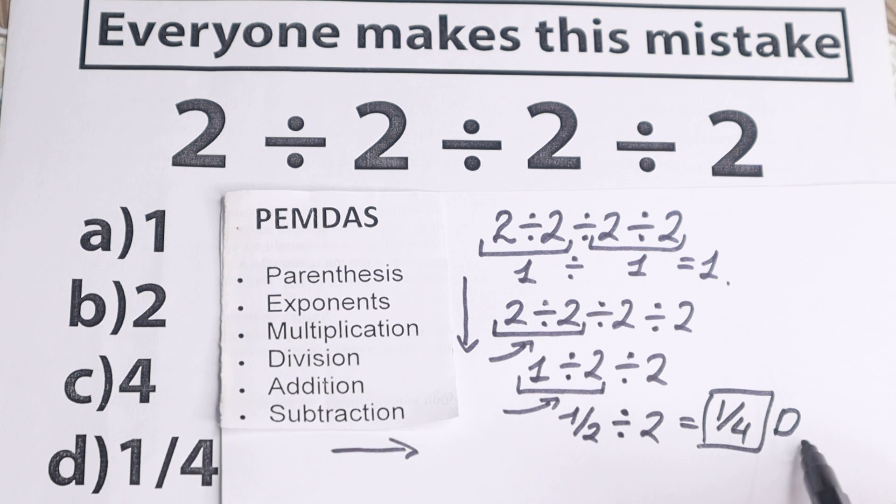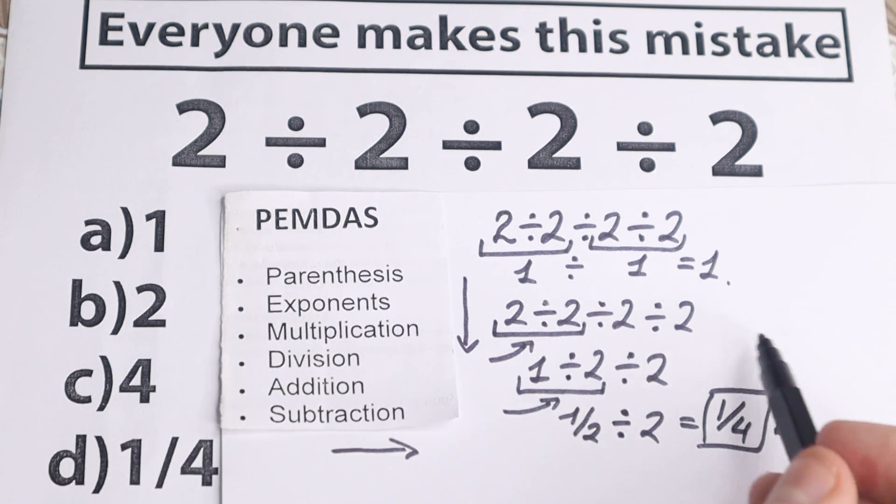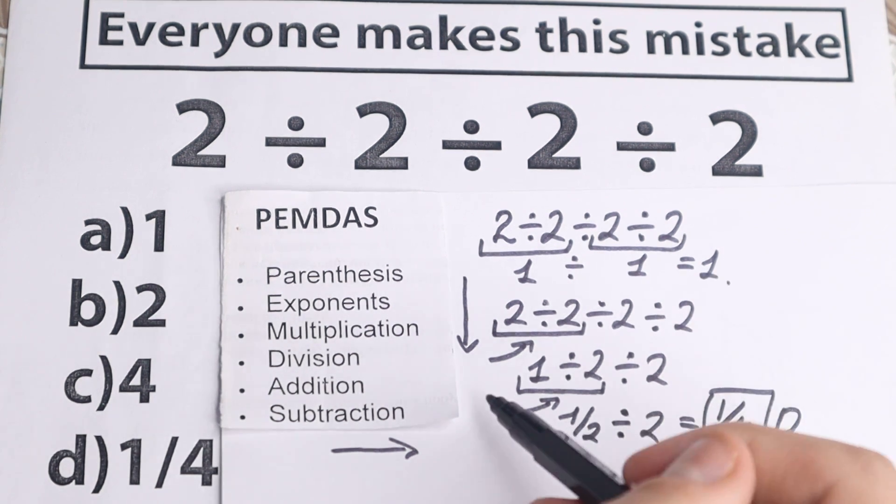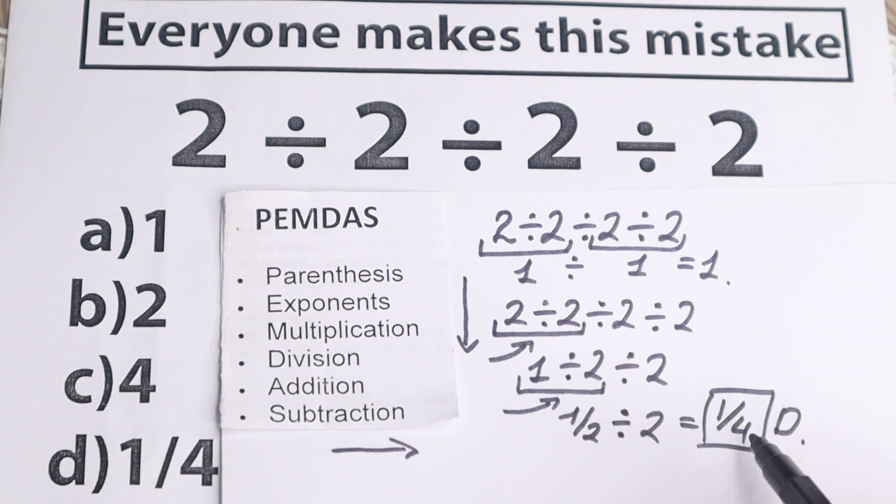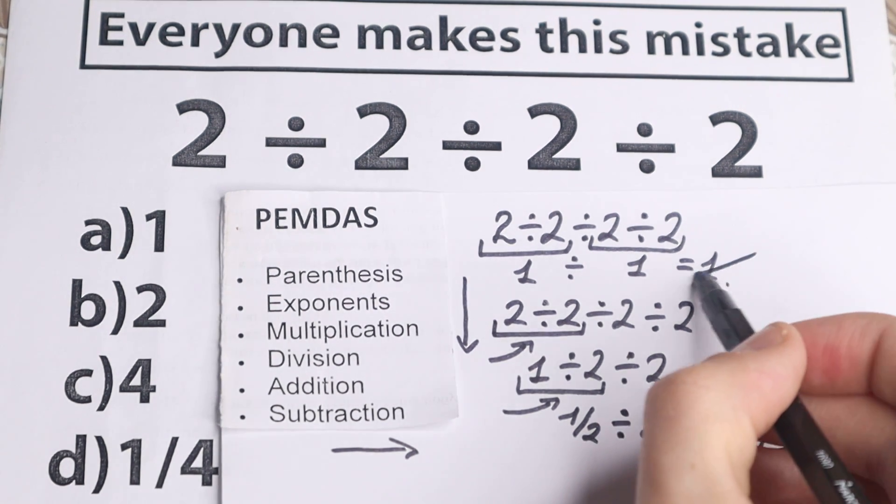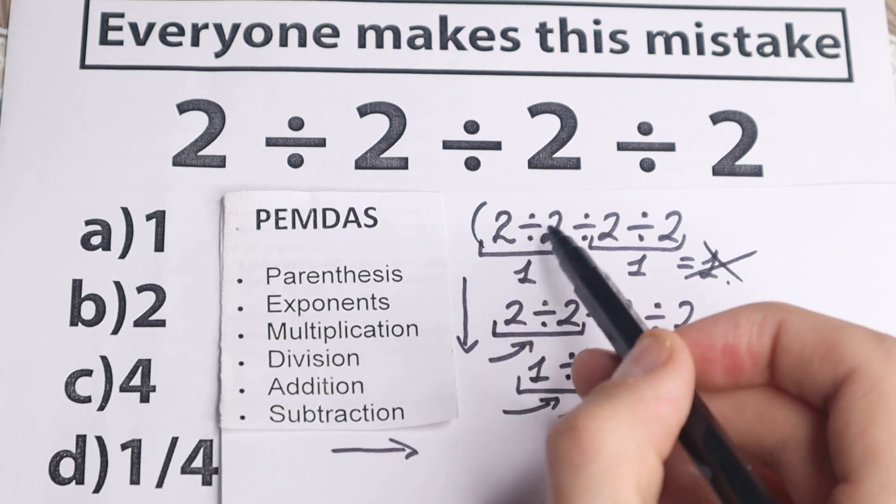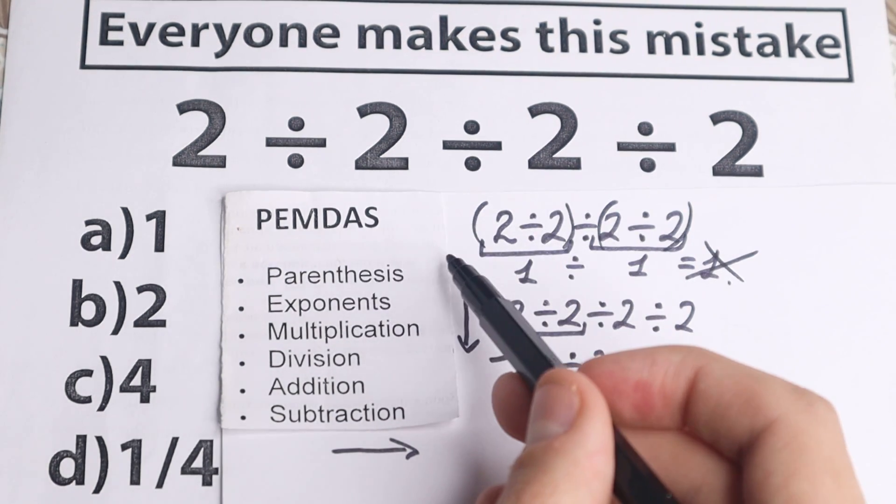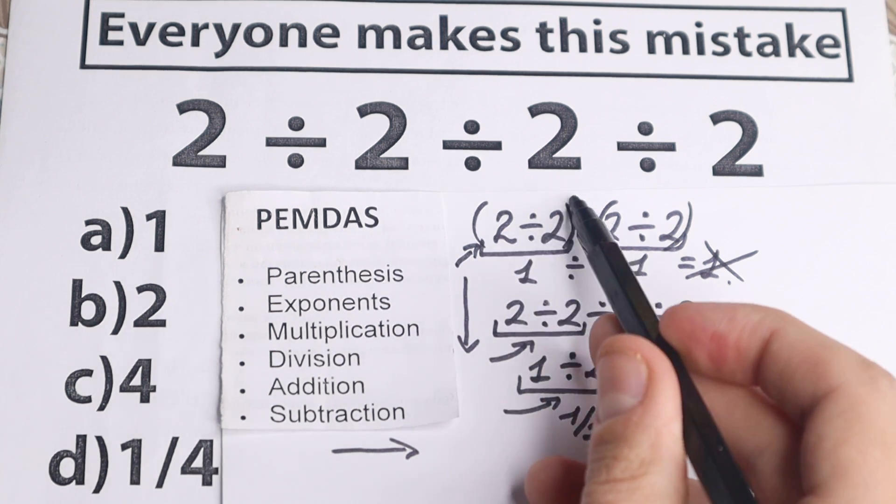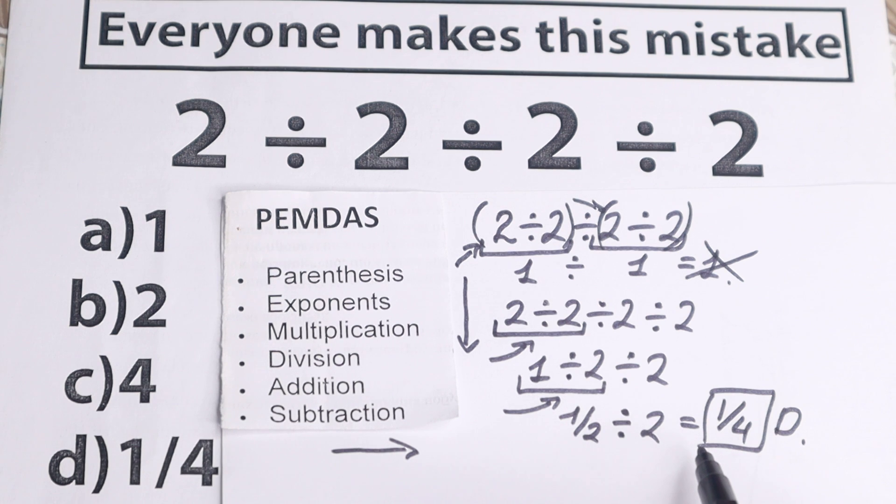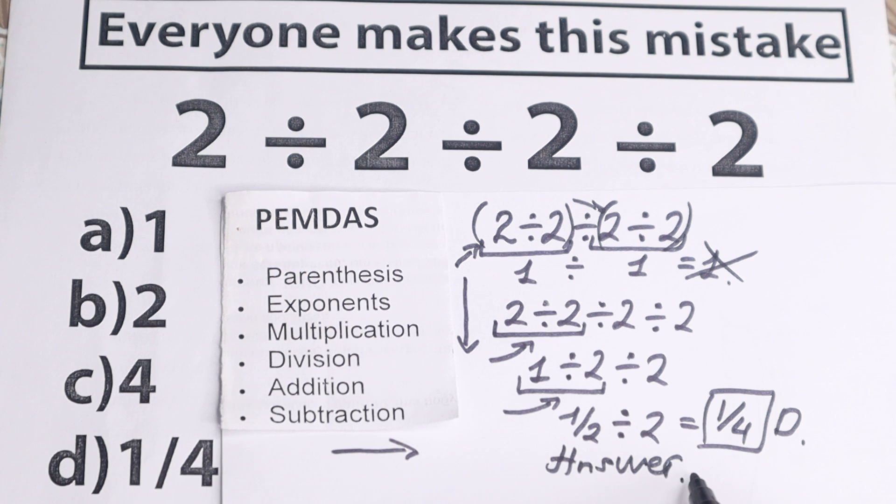As you can see, option D is a correct answer, because right here before we had 1, which is incorrect answer, because according to PEMDAS this 1 fourth is a correct answer. 1 is incorrect answer, but I show you this trick to my students, if we put parentheses right here, 1 will be correct answer, because we need to start from this parentheses, from this one, and from this one. So 1 and 1, it will be correct answer in parentheses. So 1 fourth is a correct answer, I write it right here, so answer, this is 1 fourth, option D.